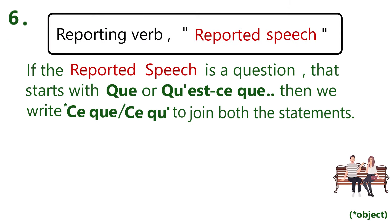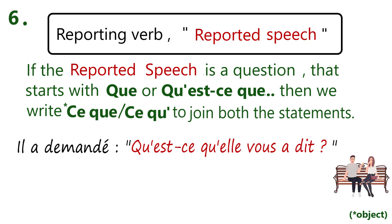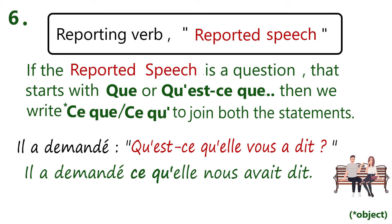Rule number six: if the reported speech is a question that starts with 'que' or 'qu'est-ce que,' then we write 'ce que' to join both the statements. For example, 'il lui a demandé qu'est-ce qu'il nous a dit' — after writing it in indirect form it will be 'il lui a demandé ce qu'il nous avait dit.' We write 'ce que' in place of 'qu'est-ce que,' and since the reporting verb is in past tense, we change the tense of the reported speech also.